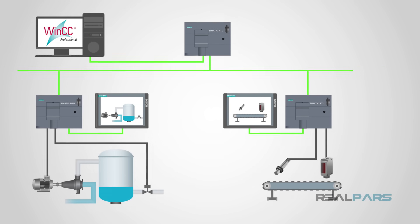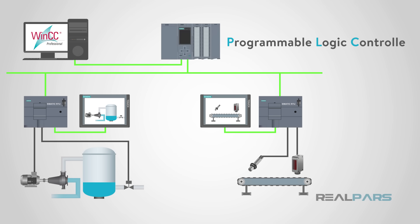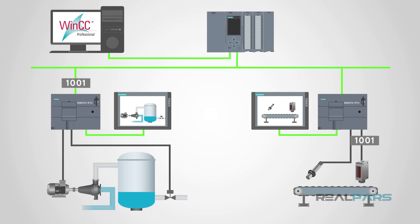The structural design of a standard SCADA system starts with Remote Terminal Units, or RTUs, and/or Programmable Logic Controllers, or PLCs. RTUs and PLCs are microprocessors that communicate and interact with field devices such as valves, pumps, and HMIs. That communication data is routed from the processors to the SCADA computers, where the software interprets and displays the data, allowing operators to analyze and react to system events.